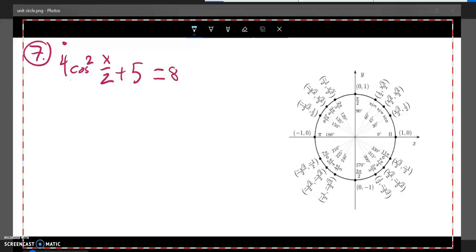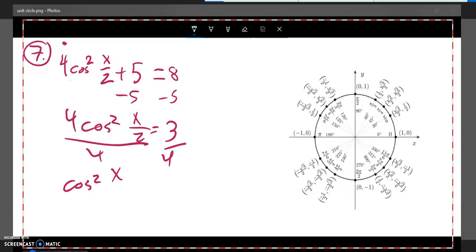So I'm going to get this cosine squared all alone and then solve it. So subtract the 5, and I get that 4 cosine squared is that. That's a 3. Divide by 4, and then I get 3 fourths.